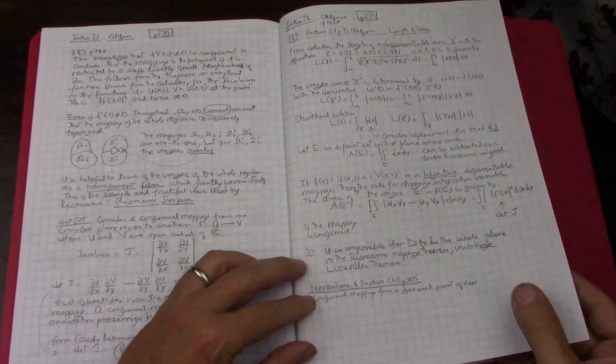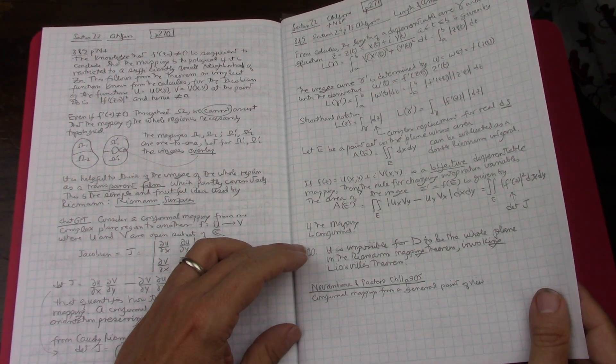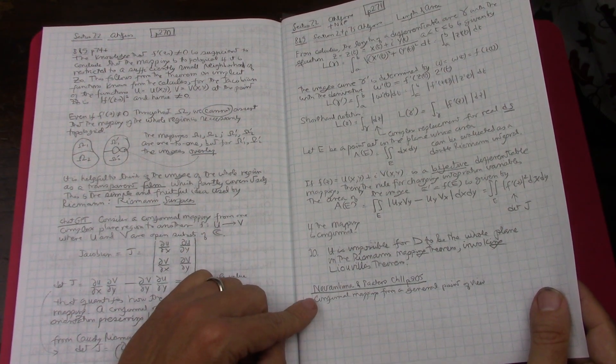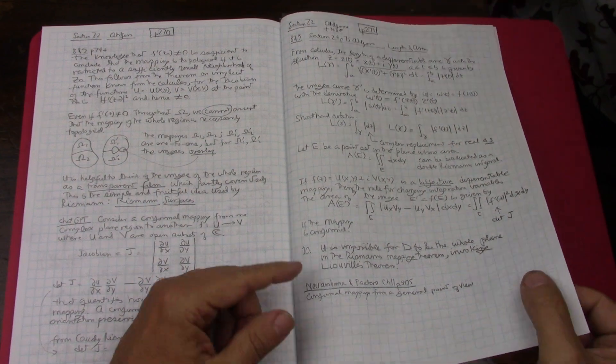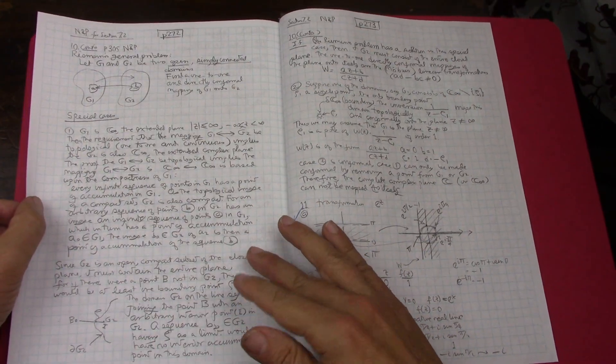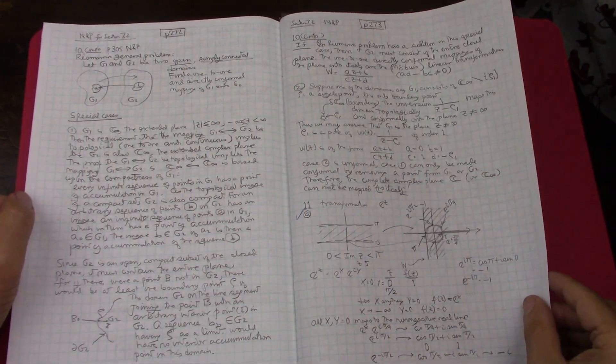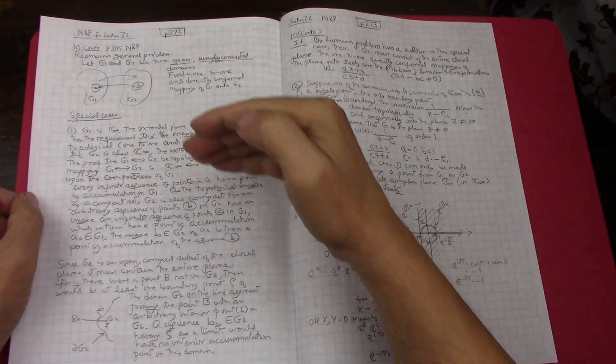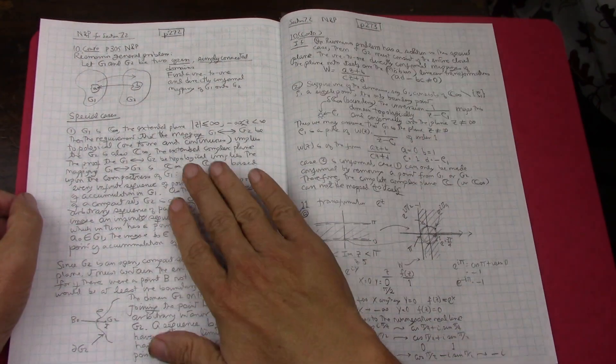Looked it up in chat GPT and then I also read a little bit in Nevanlinna and Paatero which I have I have not shown in here. Yeah and so that this was actually problem 10.